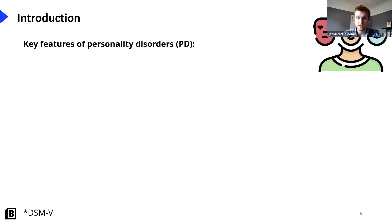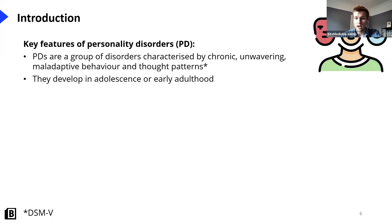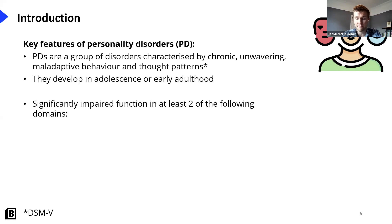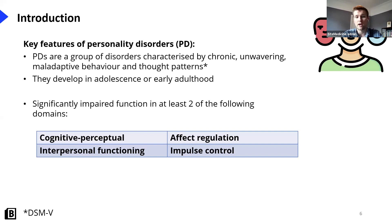Key features of personality disorders: they have to be chronic, tending to start in childhood or adolescence, but persistent and unwavering. The key is that they must be maladaptive — usually getting in the way of normal functioning. The DSM-5 states you need impaired function in at least two of the following domains: cognitive/perceptual, interpersonal functioning, affect regulation, and impulse control — things like excessive spending, gambling, or criminal activities.